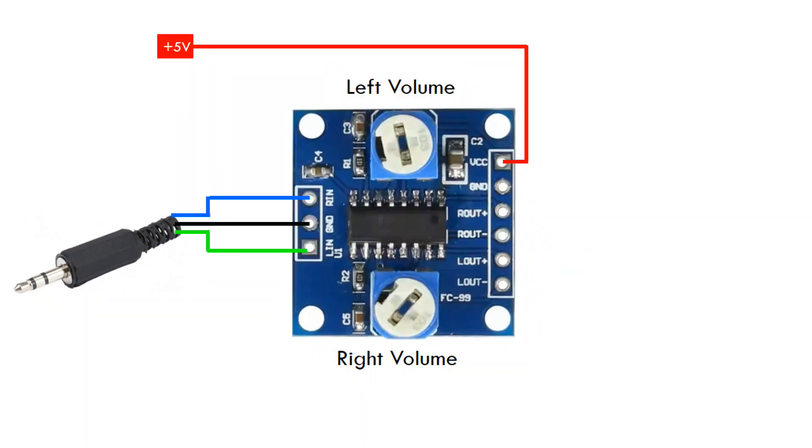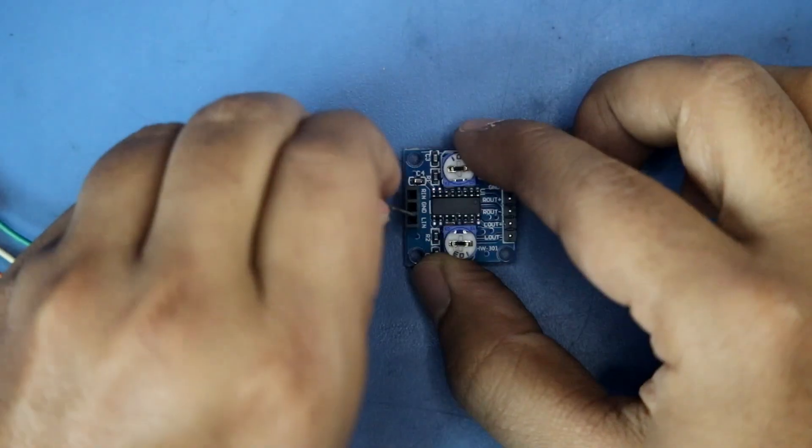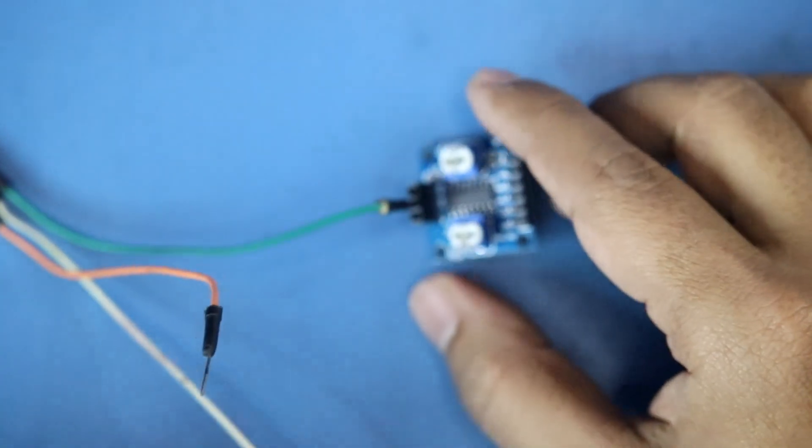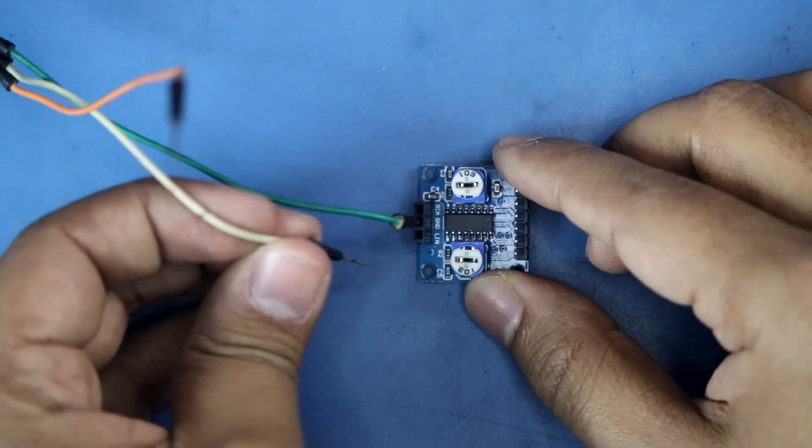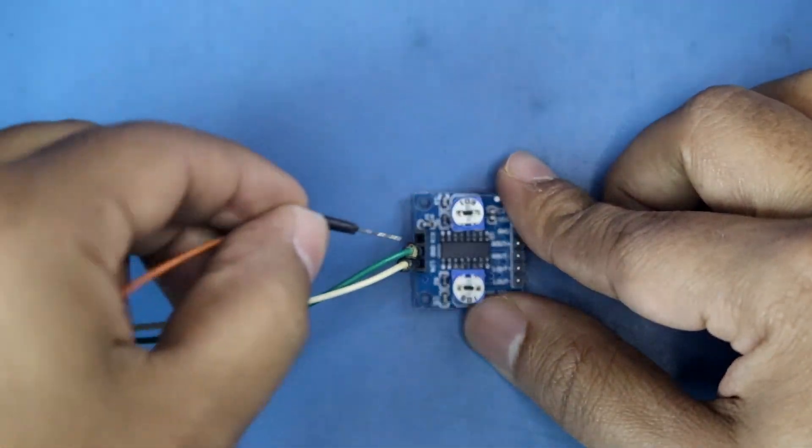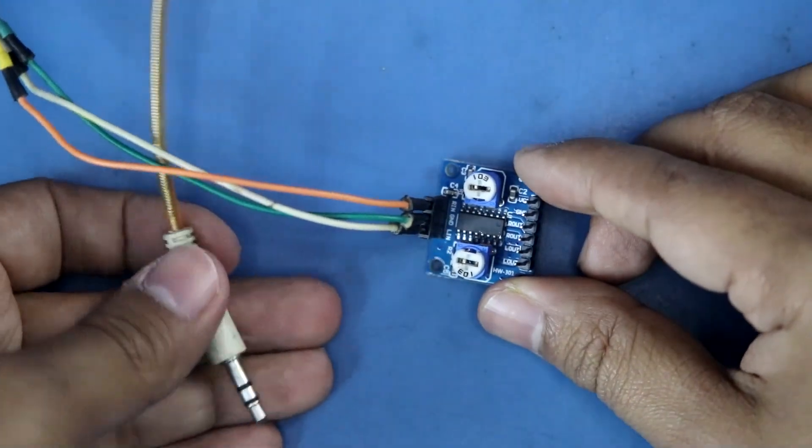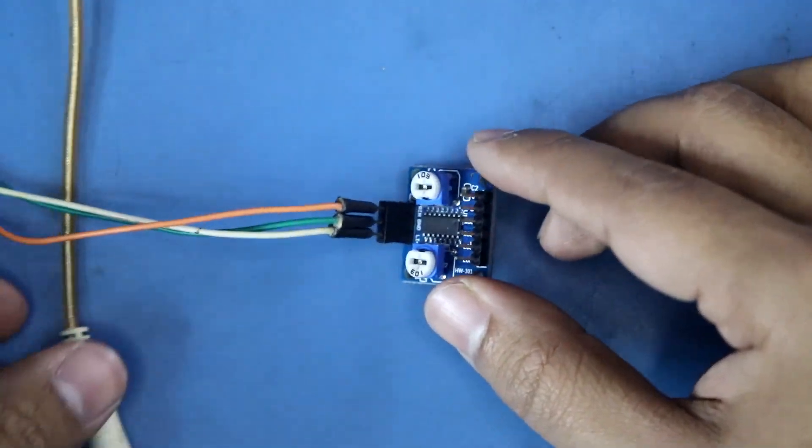The VCC pin should be connected to +5 volt, ground pin to ground. Here are the two speakers for the output. This is how we connect: green pin to ground, white pin to left input, and orange pin to right input. Input connection is completed.